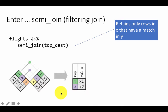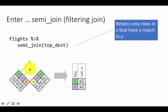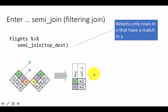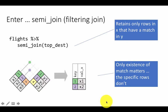So again, to understand how the semi-join works: the solid line is only going up — it found the matches but it's only keeping rows from the first table, not adding the second table's part. That's why it's called a semi-join. The second table is used only to determine what to retain and what not to retain; it doesn't contribute any new columns. Only the existence of a match matters.